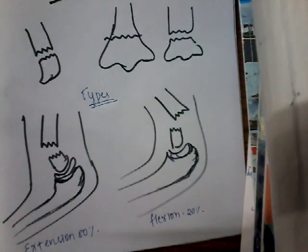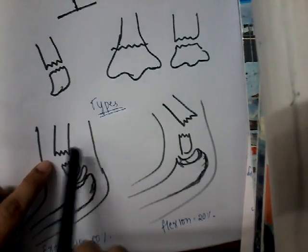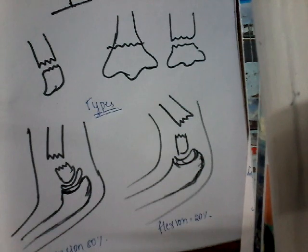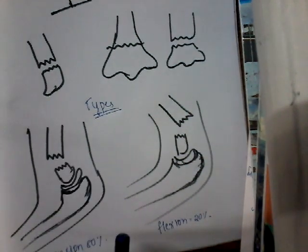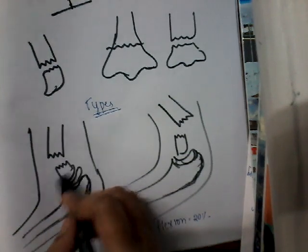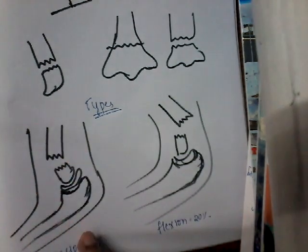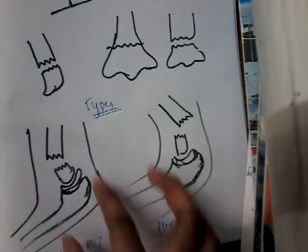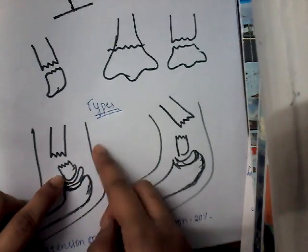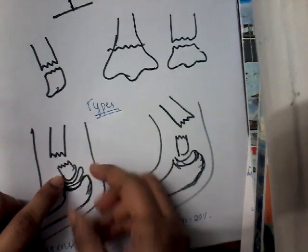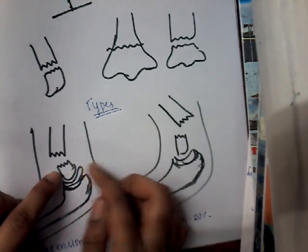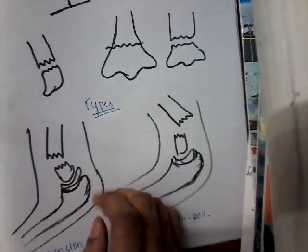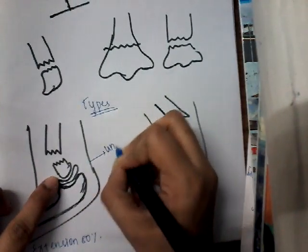The patient comes with a history of fall, followed by pain and swelling, and sometimes you can see deformity. The patient is unable to move the elbow joint because the joint is affected. On examination, because there is a backward tilt, you can see an unusual prominence at this region.